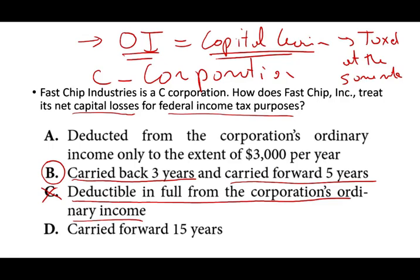Also, some students will choose the answer 'deducted from the corporation's ordinary income only to the extent of $3,000 per year.' That is true for an individual — for a person, yes — but not for a corporation. For a corporation, you take your capital losses, offset capital gains, and anything left you can carry back three years or carry forward five years. Carrying it forward 15 years is wrong. You have to differentiate how capital losses are treated for individuals versus corporations.